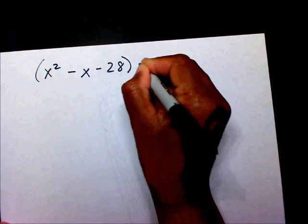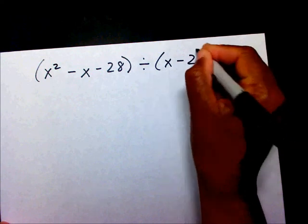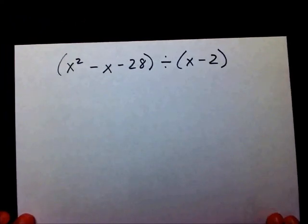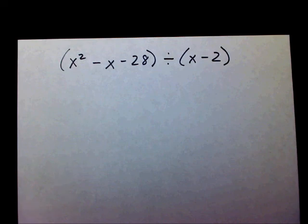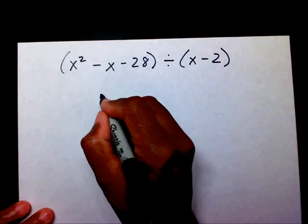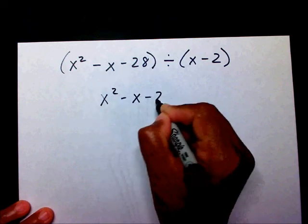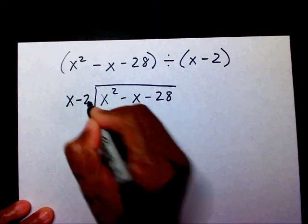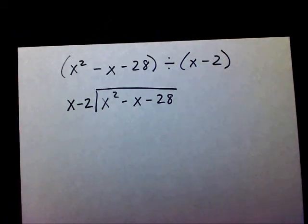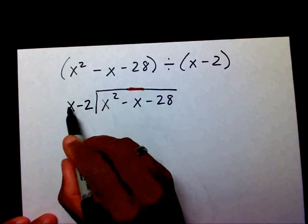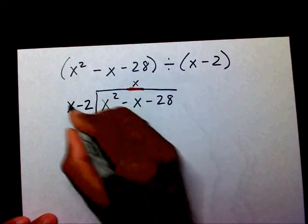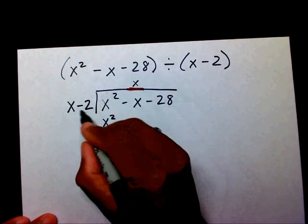I have x squared minus x minus 28 divided by x minus 2. If you'd like to put the video on pause and try to divide these polynomials before I work it out, you can do that. So I have x squared minus x minus 28 divided by x minus 2. This is a binomial, so I'm going to start in the center of my trinomial. What number times x will give me x squared? Well, x times x is x squared, and x times negative 2 is negative 2x.